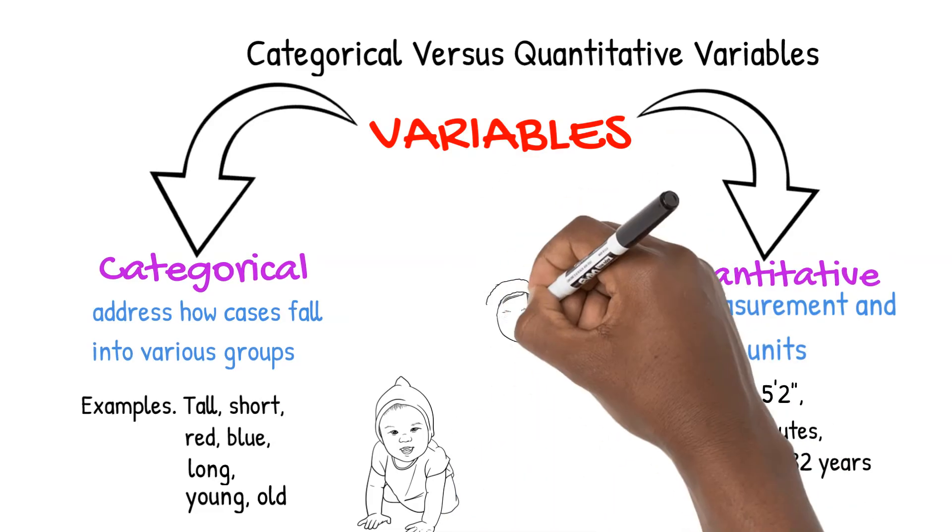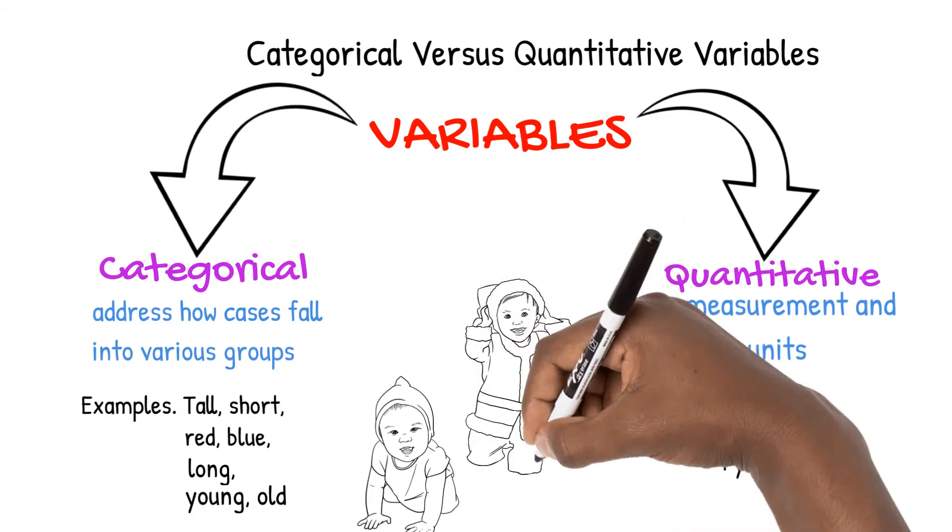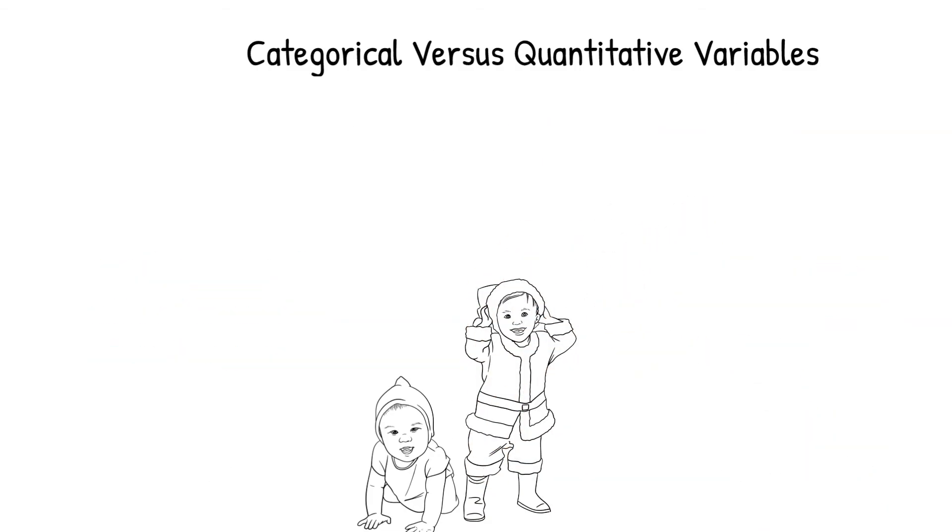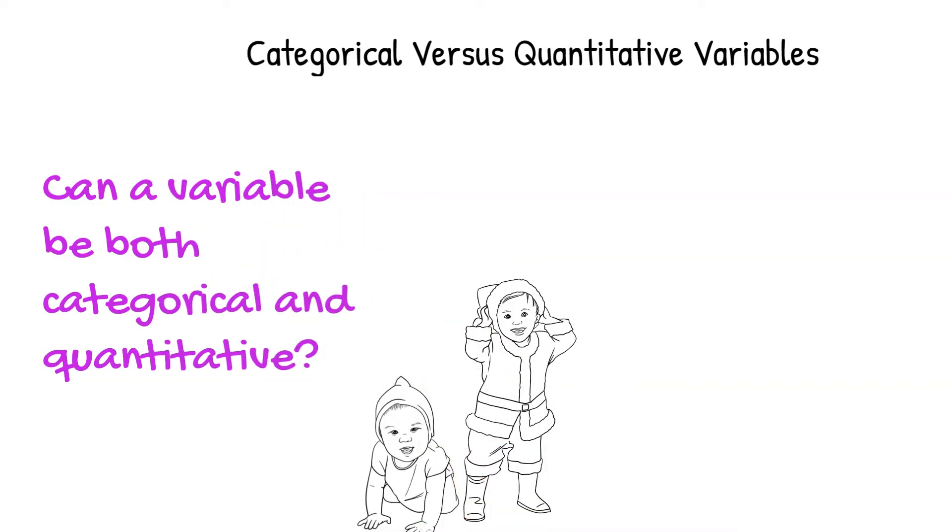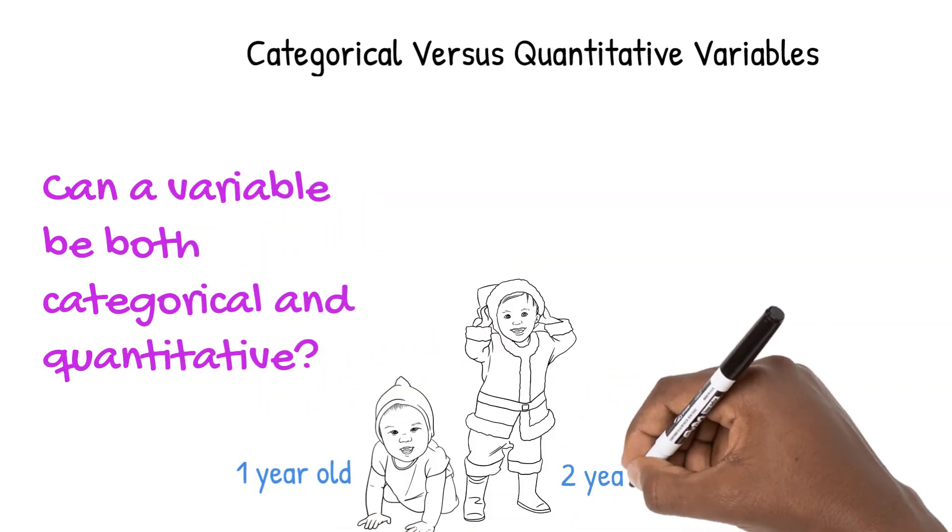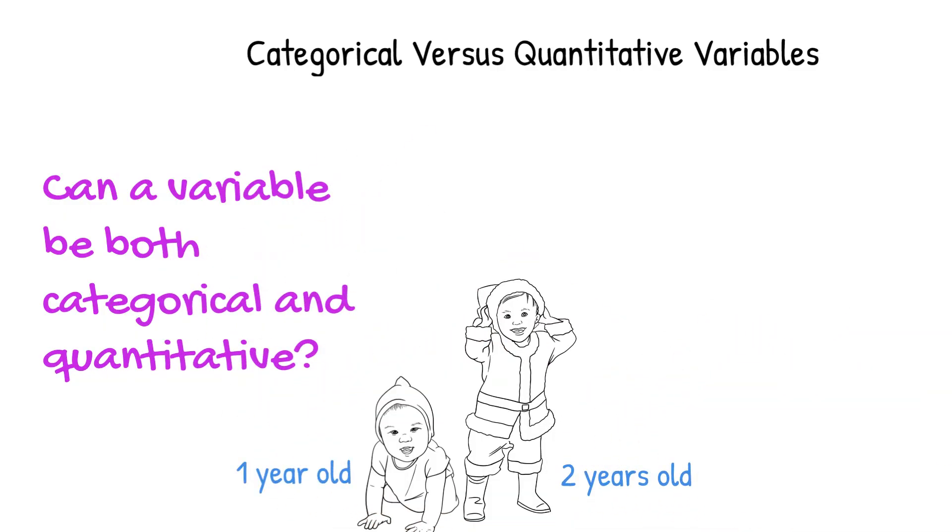Let's replace Erald with Mikey's big brother Shane and examine the question: can a variable be both categorical and quantitative? Mikey is one year old and Shane is two years old. We've already said that this is quantitative data, since age is a measurement of time.